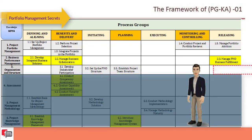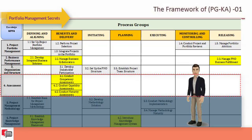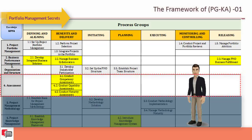The fourth knowledge area is the role of assessment. Organizations improve business and project management performance by analyzing three related factors: people, process, and practice. There are three processes: conduct competency assessment, conduct capability assessment, and conduct maturity assessment.